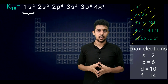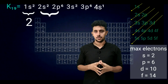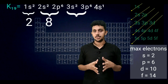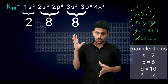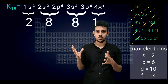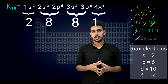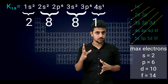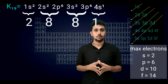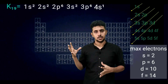Now see the shell configuration of potassium: 2 electrons in the first shell, 2s2 2p6 so 8 electrons in the second shell, 3s2 3p6 so 8 electrons in the third shell, and 4s1 — that is 1 electron in the fourth shell. So the shell configuration of potassium is 2, 8, 8, 1.